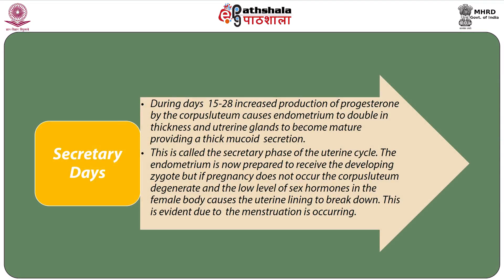During the secretory phase, days 15 to 28, increased production of progesterone by the corpus luteum causes the endometrium to double in thickness and uterine glands to become mature, providing a thick mucoid secretion. The endometrium is now prepared to receive the developing zygote, but if pregnancy does not occur, the corpus luteum degenerates and the low level of sex hormones causes the uterine lining to break down. This is evident when menstruation occurs.